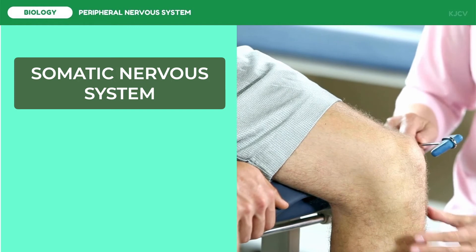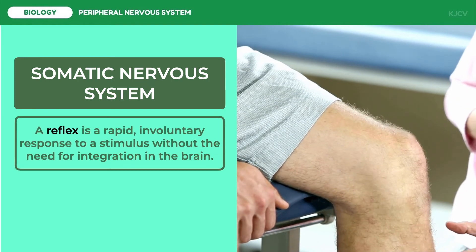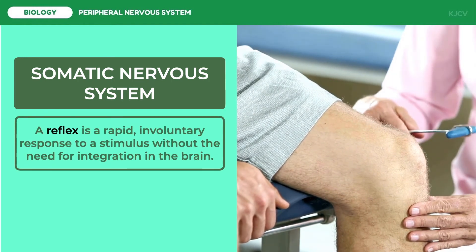A reflex is a rapid involuntary response to a stimulus without the need for integration in the brain. The classic example of the stretch reflex is the patellar tendon, or knee jerk reflex. The extensor muscle of the knee is the quadriceps femoris, which forms the anterior or front portion of the thigh and is attached just below the knee to the tibia or shin bone by the patellar tendon. Tapping this tendon with a rubber mallet passively stretches the quadriceps muscle, activating its spindle receptors.